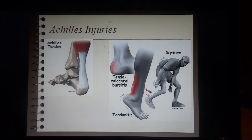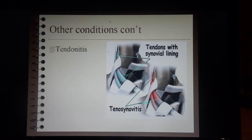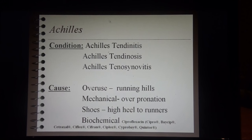Now, on to Achilles injuries. The Achilles tendon can involve tendinocalcaneal bursitis — inflammation of that fluid-filled sac — as well as rupture or tendonitis. Tendinitis in tendons with a synovial lining is called tenosynovitis, which is irritation to that lining. Achilles tendinitis is from overuse causing irritation to the tendon. We have Achilles tendinitis, Achilles tendinosis, and Achilles tenosynovitis.